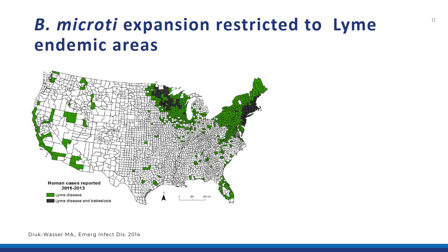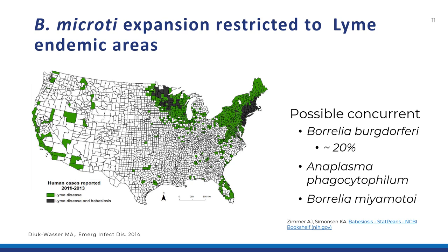Ixodes ticks can also transmit Borrelia miyamotoi, Anaplasma phagocytophilum, and three relatively rare pathogens: Powassan virus, Borrelia mayonii, and Ehrlichia muris eauclairensis. Thus, it's possible that Babesia and these other pathogens can infect patients concurrently. In fact, 20% of Babesiosis patients have concurrent Lyme disease.